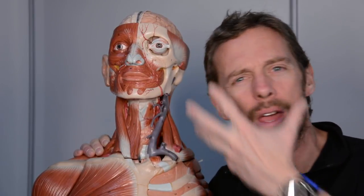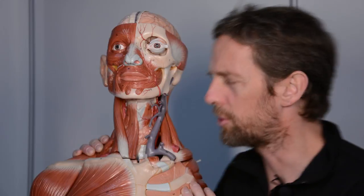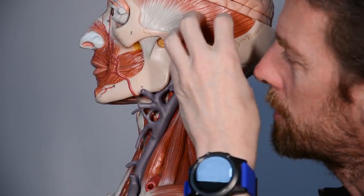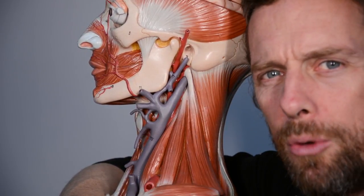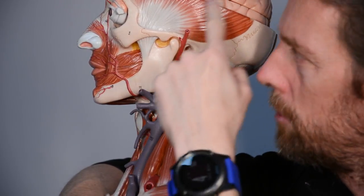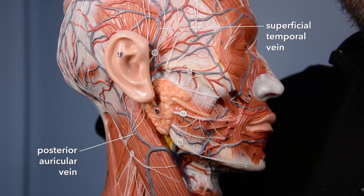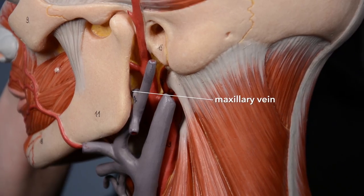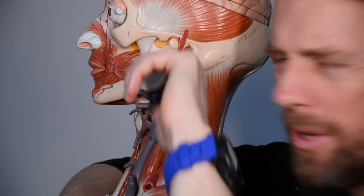The external jugular vein appears when you start moving the muscles of your face quite a lot, suggesting it's draining blood from the muscles of the face and the superficial face. How does the external jugular vein form? The ear is here — that's the auricle. Posterior to the auricle we have the posterior auricular vein. Anterior to the auricle we have the superficial temporal vein. We also have the maxillary vein, matching the maxillary artery and draining blood from the deep face.